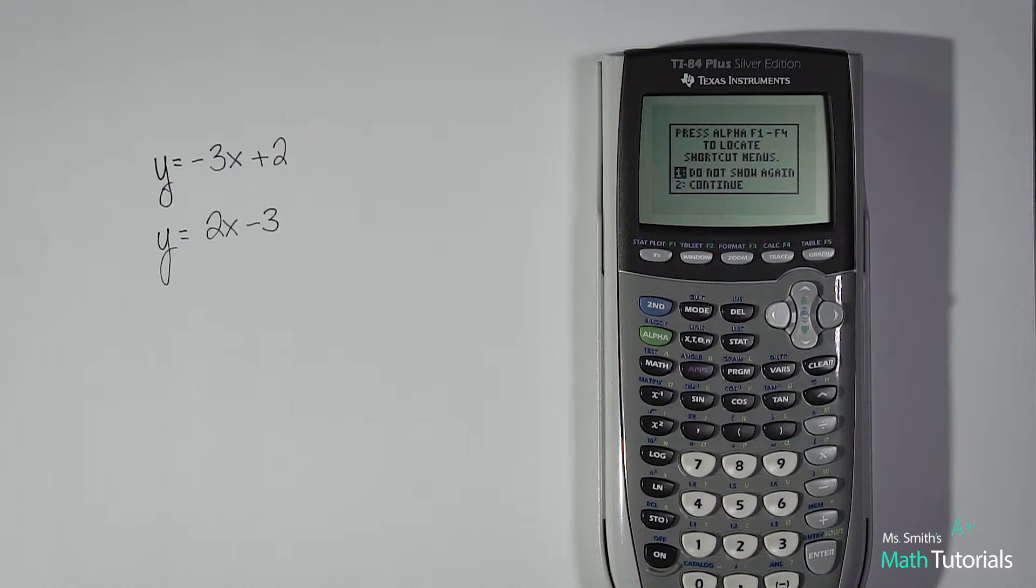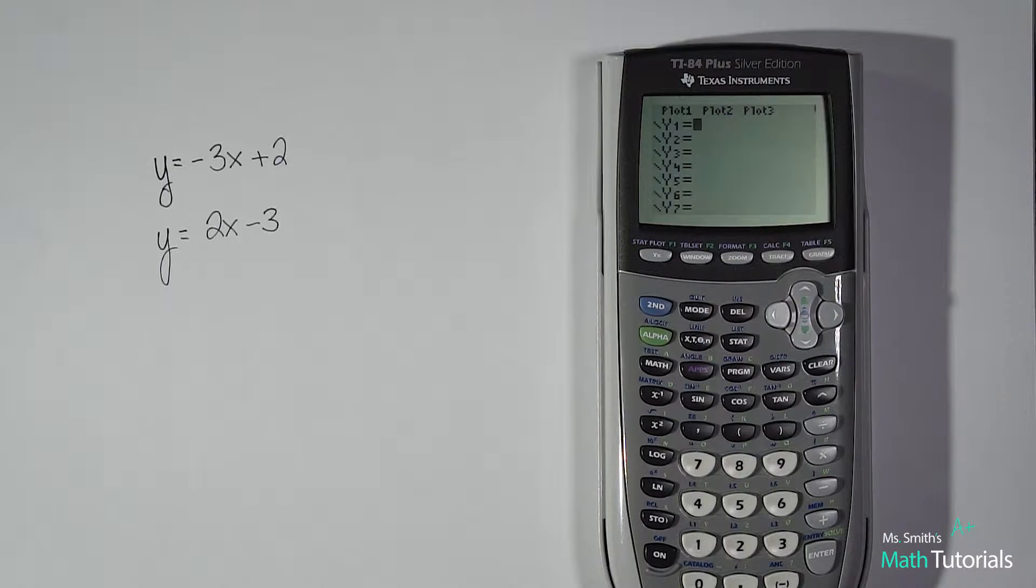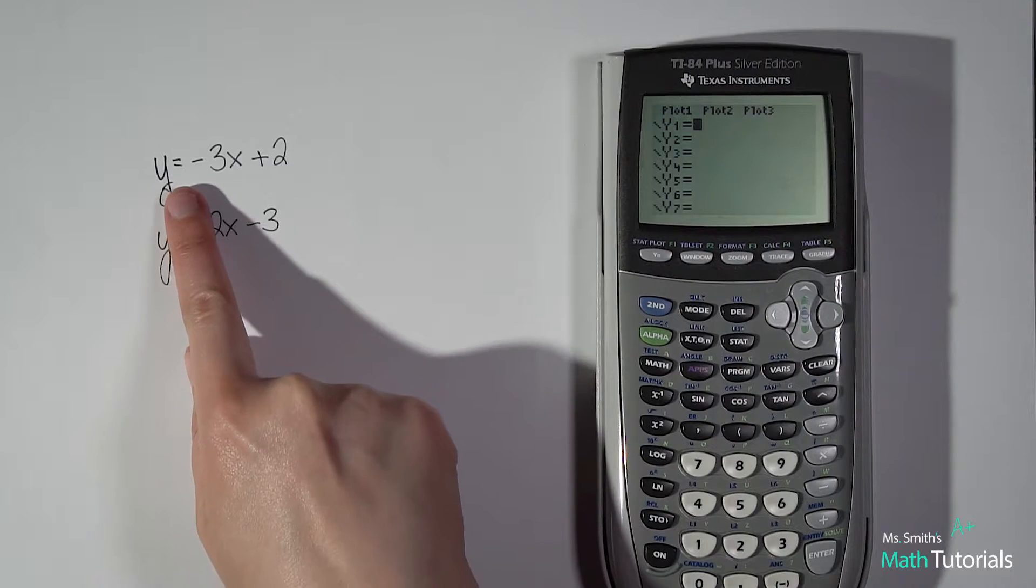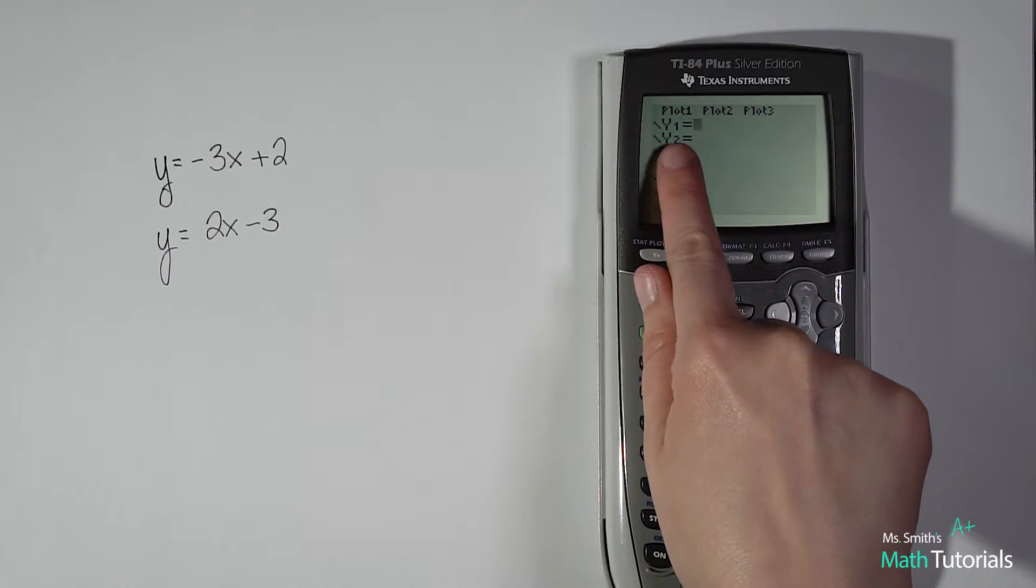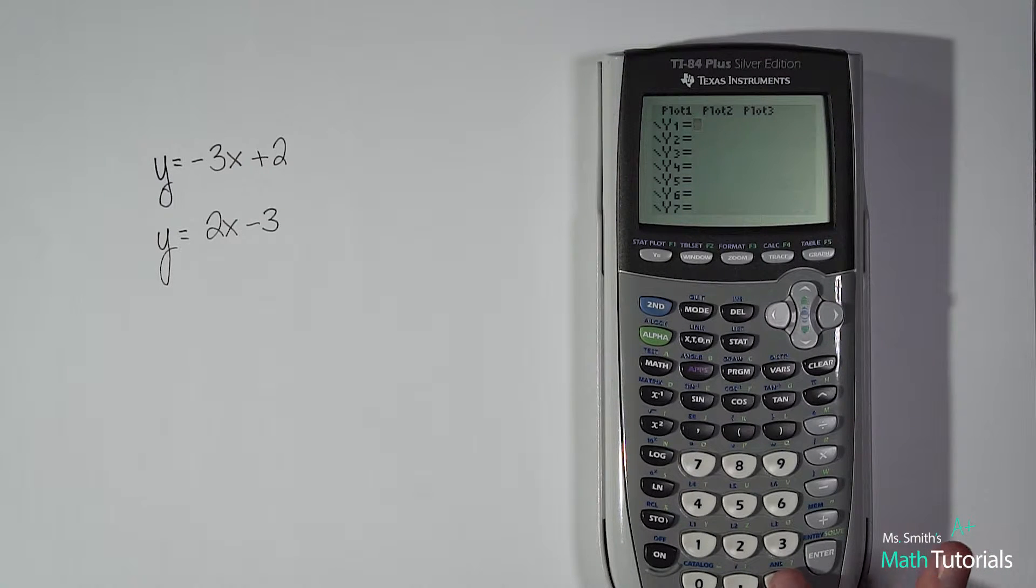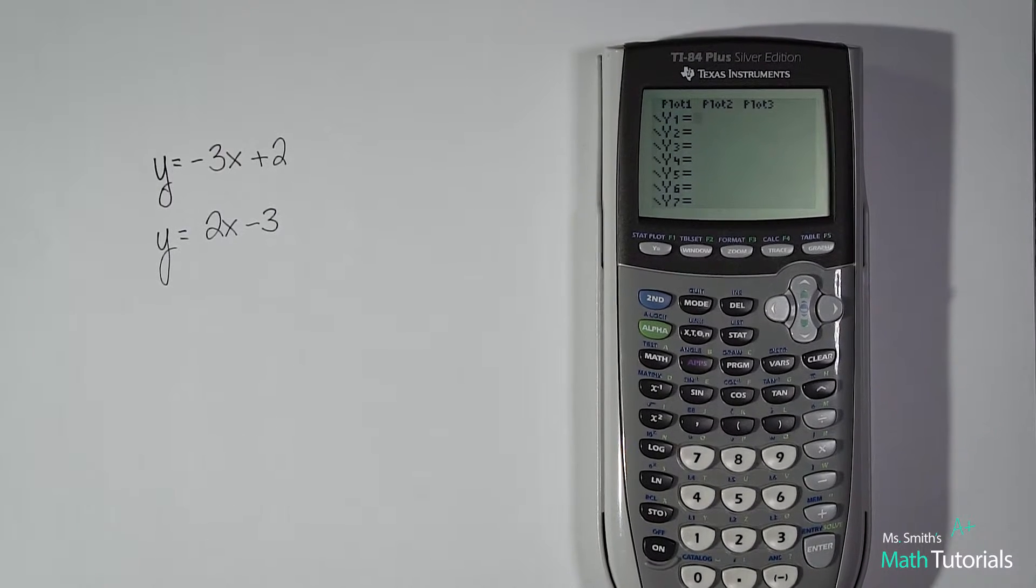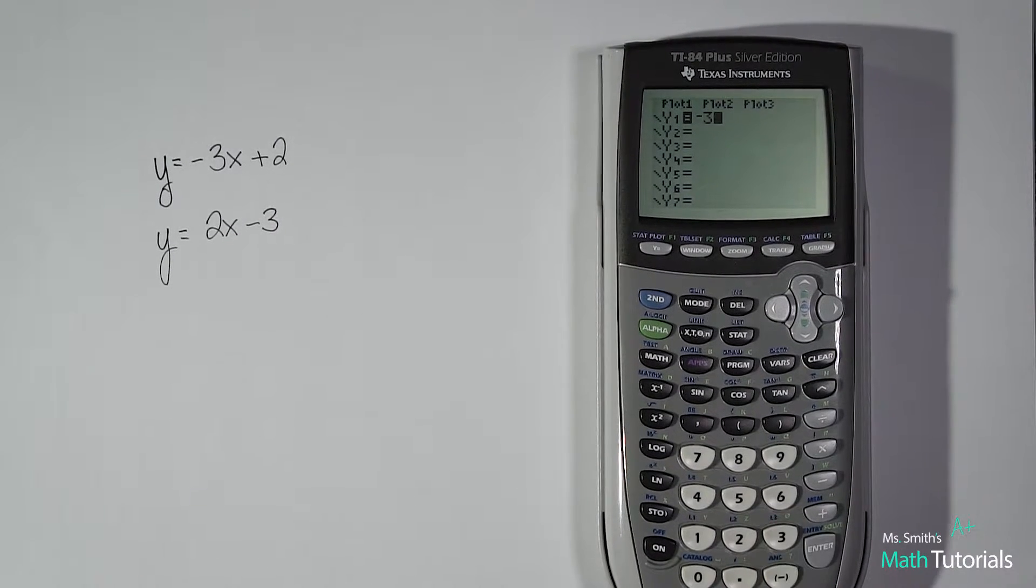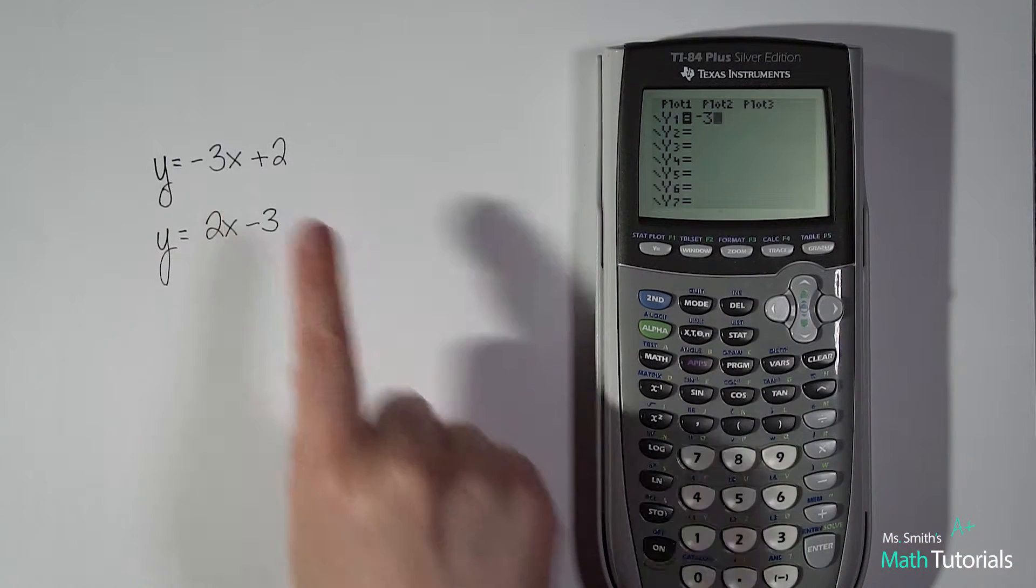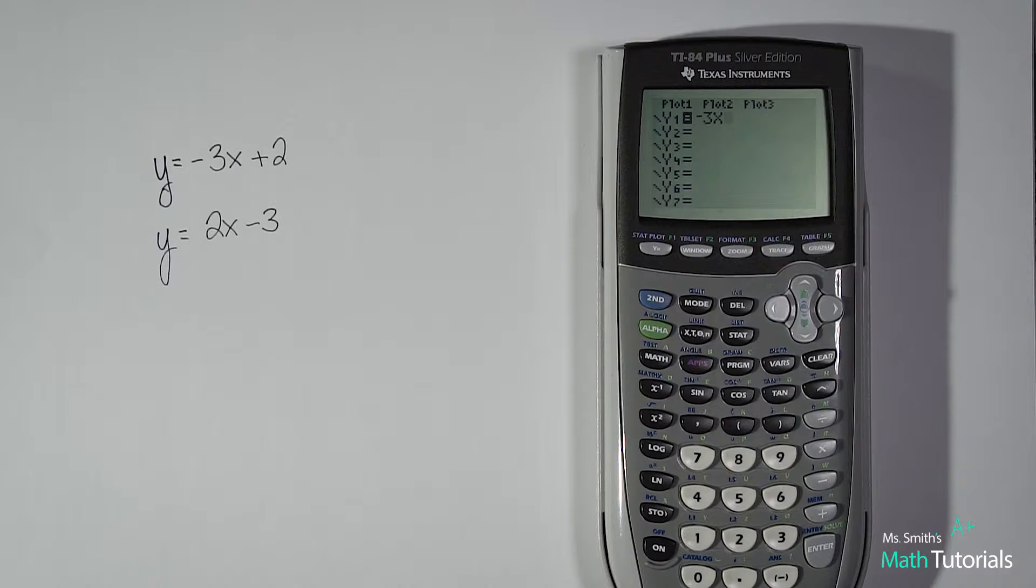So what you do is you cut your calculator on and you're gonna go to this y equals function up here and you're gonna type in your first equation so this is y equals, you'll notice I already have my y1 equals and I'm gonna type this in. I'm gonna hit negative 3 and I do have to use the negative symbol not the minus symbol. So that's a common error students make. So negative 3x and for x you're gonna use this button right here you'll see the first little letter is x plus 2.